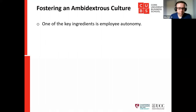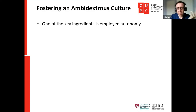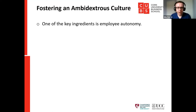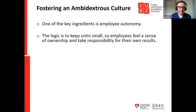How do you foster an ambidextrous culture? One key ingredient that comes back time and again is employee autonomy. Three organisations renowned for this are Hewlett-Packard, Johnson & Johnson, and ABB — an engineering company based in Sweden. These organisations share several things in common: they tend to have far more business units or profit centres than equivalent companies, and they keep units small so employees feel a sense of ownership and take responsibility for their own results.